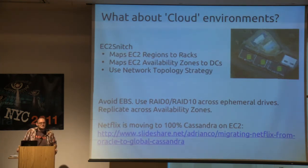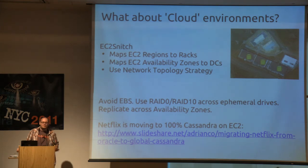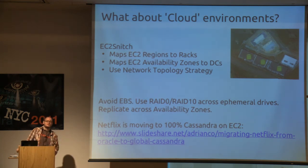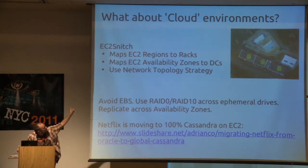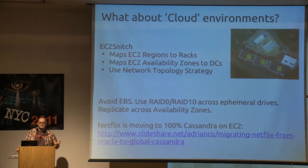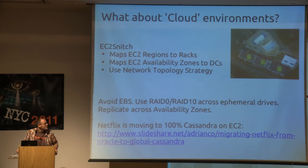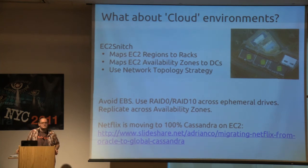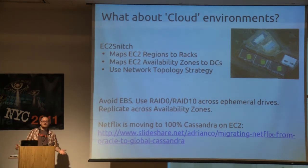We don't use EC2 — you can ask my boss about that. From my understanding, with the EC2 Snitch it maps availability zones to data centers and regions to racks, using NTS. General best practice is to avoid EBS because it doesn't deal well with load. RAID 0 or RAID 10 across the ephemeral drives is usually best practice, then you replicate across availability zones. Netflix is doing all sorts of awesome stuff with Cassandra — leaving Oracle completely for Cassandra, all in EC2.